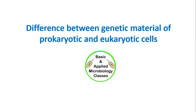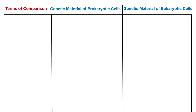Hello everyone, welcome back. I hope you all are doing good. Today we will talk about some differences between the genetic material of prokaryotic and eukaryotic cells. Let's start with the first point of difference: presence of a true nucleus.